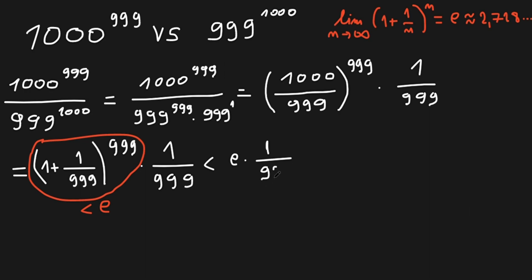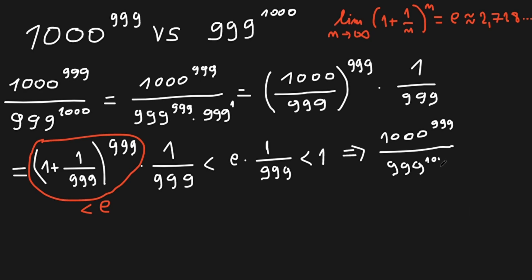This value is smaller than e, and then all this times 1 divided by 999 is smaller than 1. So we have 1000 to the power of 999 divided by 999 to the power of 1000 is smaller than 1. This means 1000 to the power of 999 is smaller than 999 to the power of 1000, and this is our answer.